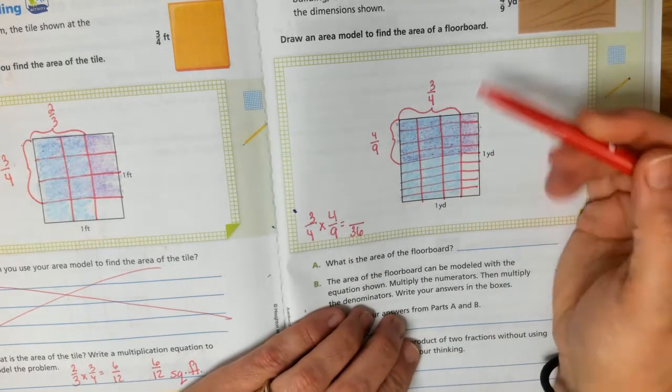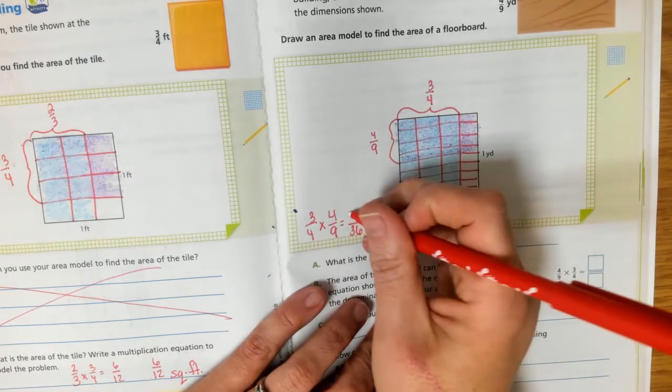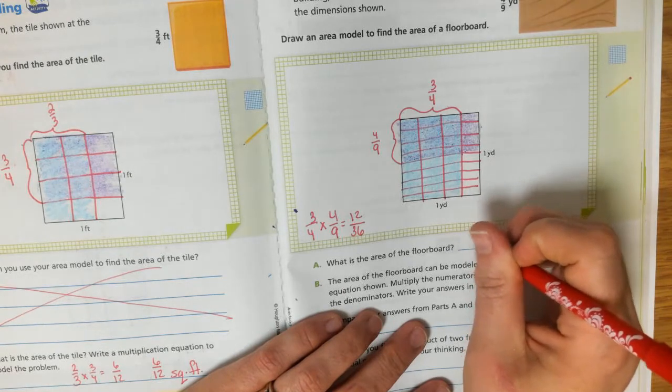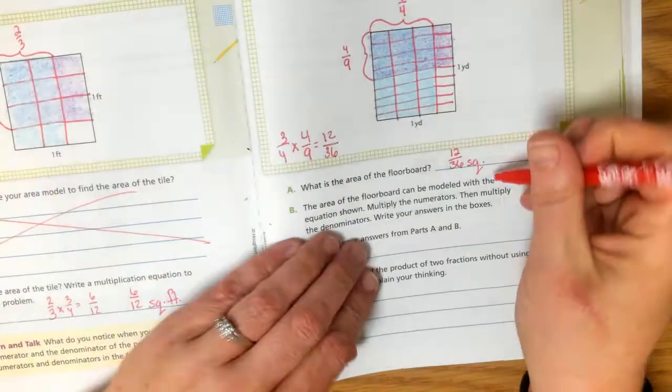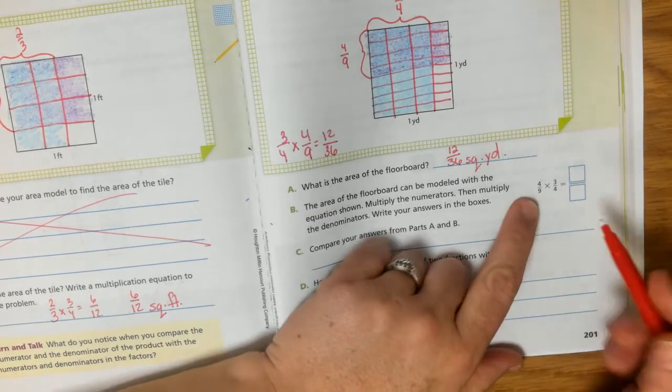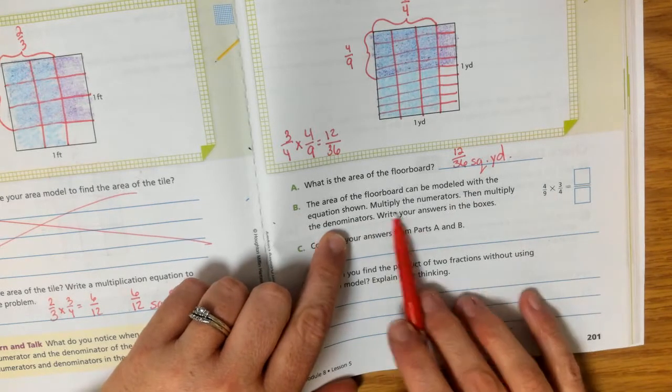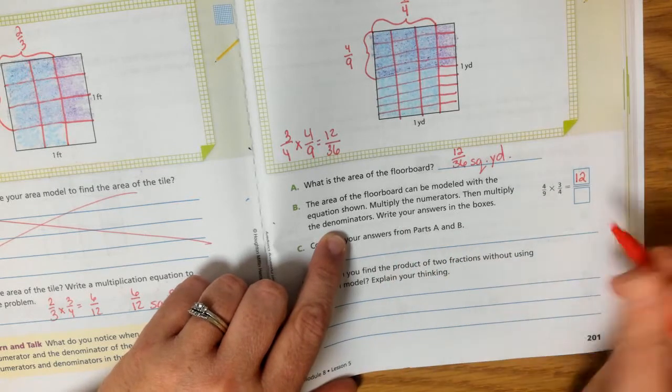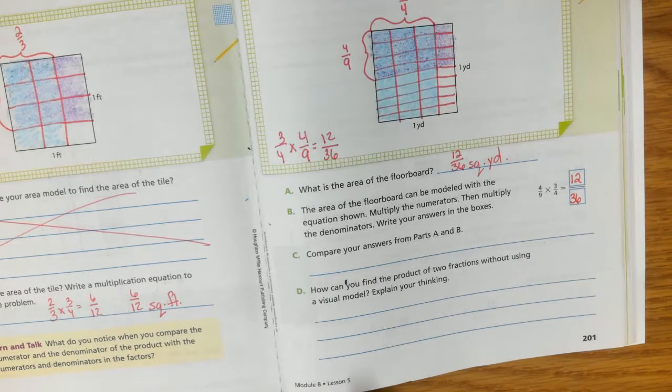Which 4 times 9 is 36. And then how many are doubly shaded? 1, 2, 3, 4, 5, 6, 7, 8, 9, 10, 11, 12, which 3 times 4 would equal 12. So the area of the floorboard is 12 36ths square, and this time we're using yards. So when we multiply, we multiply, so the area will be modeled with this equation. You're going to multiply the numerators, 4 times 3, then multiply the denominators, 9 times 4, and that's your answer. OK? So we're going to skip C and D because we did the work. We don't need to write sentences. We did the work.